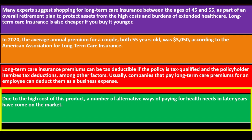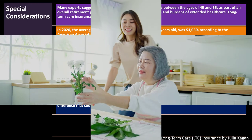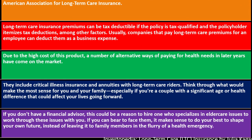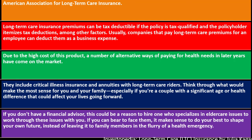Due to the high cost of this product, alternative ways of paying for health needs in later years have come on the market, including critical illness insurance and annuities with long-term care riders. Think through what makes the most sense for you and your family, especially if you're a couple with a significant age or health difference. If you don't have a financial advisor, this could be a reason to hire one who specializes in elder care issues.